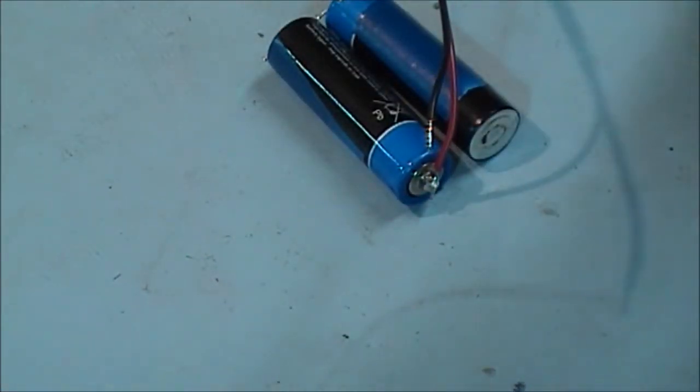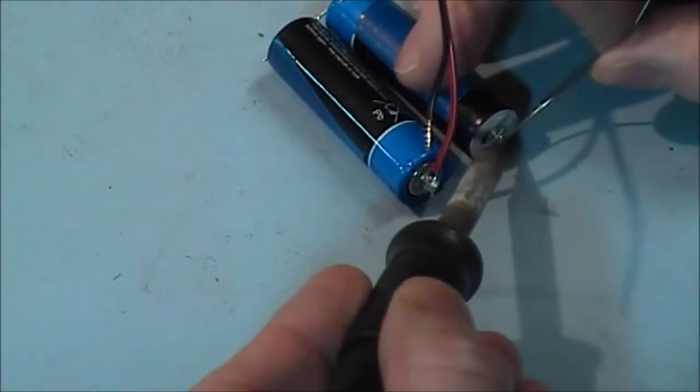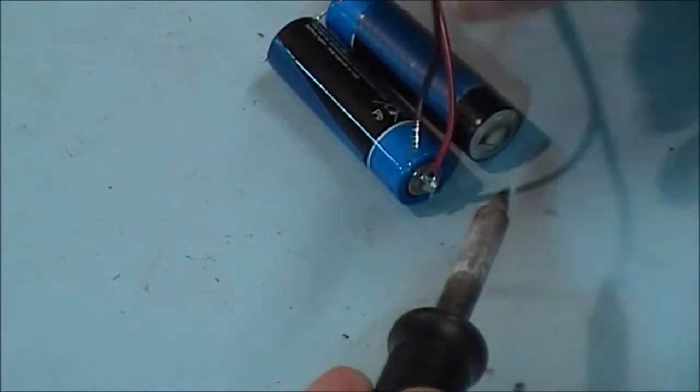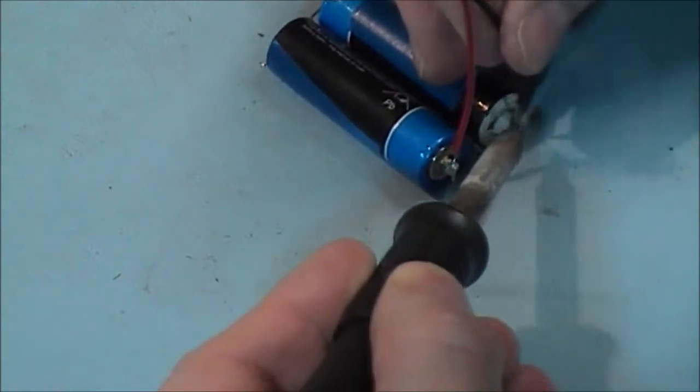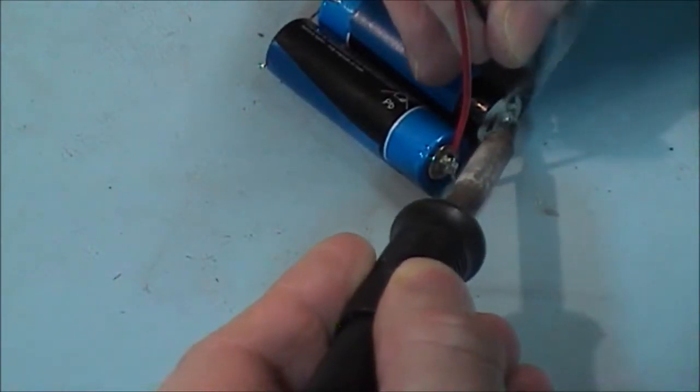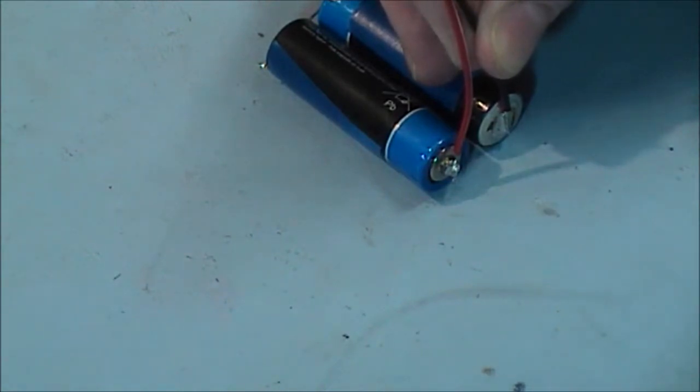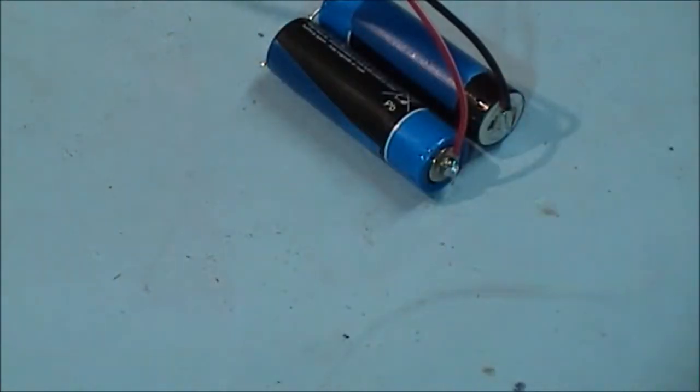And then I'm going to solder the other one to the negative pole. Make sure you've got fully charged batteries—you don't want to put dead batteries on it.